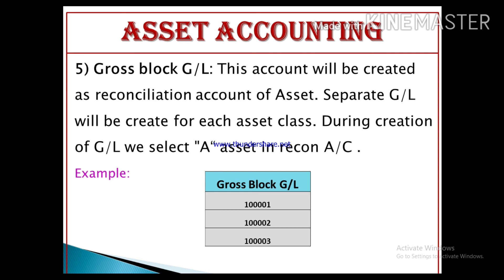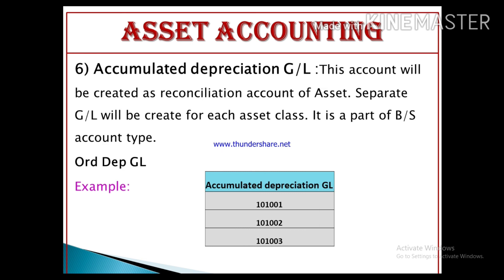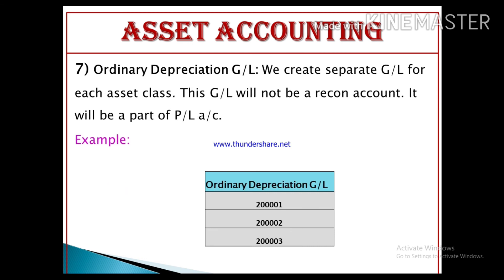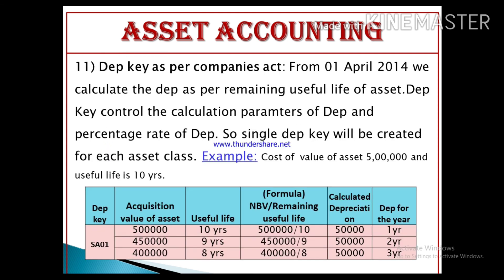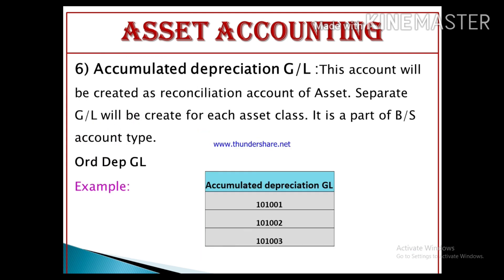The next term is accumulated depreciation GL. This account is also created as a reconciliation account of asset, and a separate GL is created for each asset class. It is a balance sheet account and will show on the asset side of the balance sheet. There are more terms which we will cover in the next video — until then, do practice.